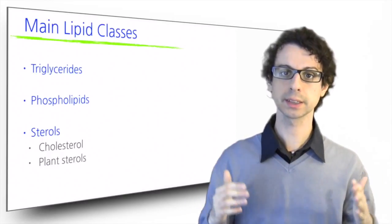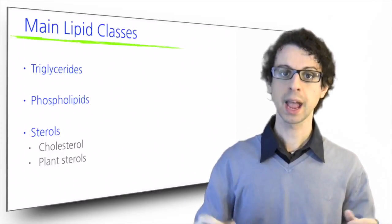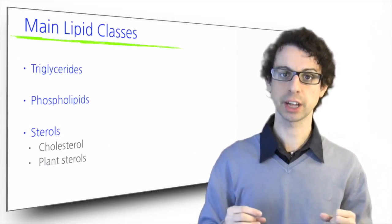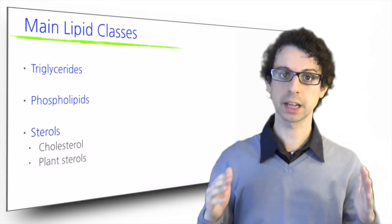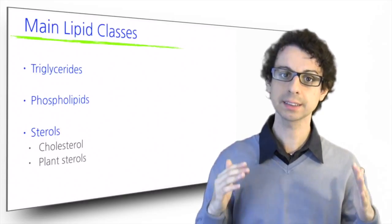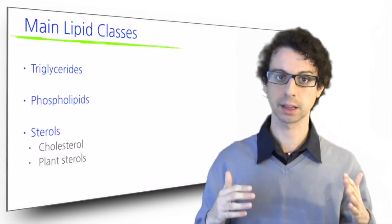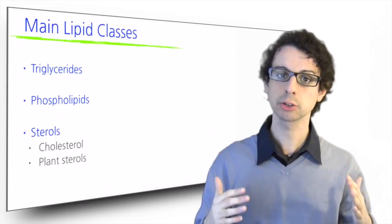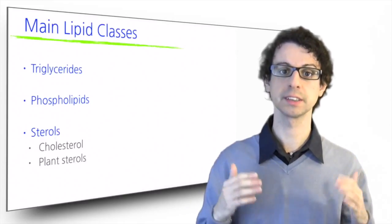Triglycerides are the most abundant lipids in our food and our body, and they have primarily an energetic function. Phospholipids and cholesterol, which is the most important sterol in our body, are quantitatively less important, but still fundamental in our body because of the structural and regulatory functions that they have.